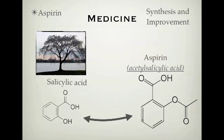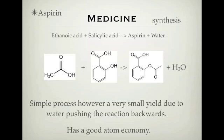Now let's look at how aspirin is made — two ways. The first equation: reacting ethanoic acid and salicylic acid together to form aspirin and water. You can see there's an esterification reaction — a condensation reaction — where you react the acidic area with the OH phenyl alcohol group. This is a simple process and quite green. It has a really good atom economy, making it a really good green approach to making aspirin.